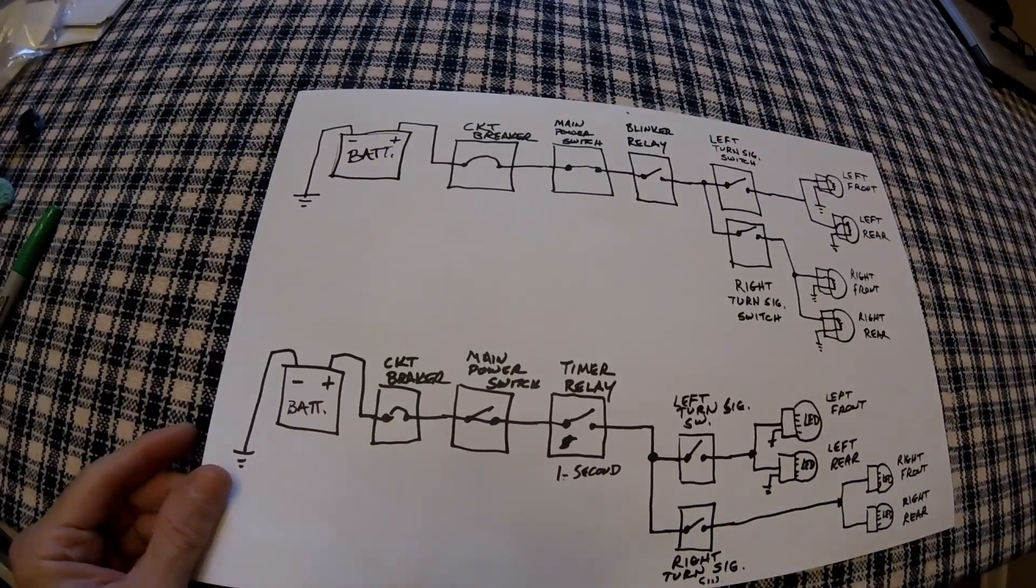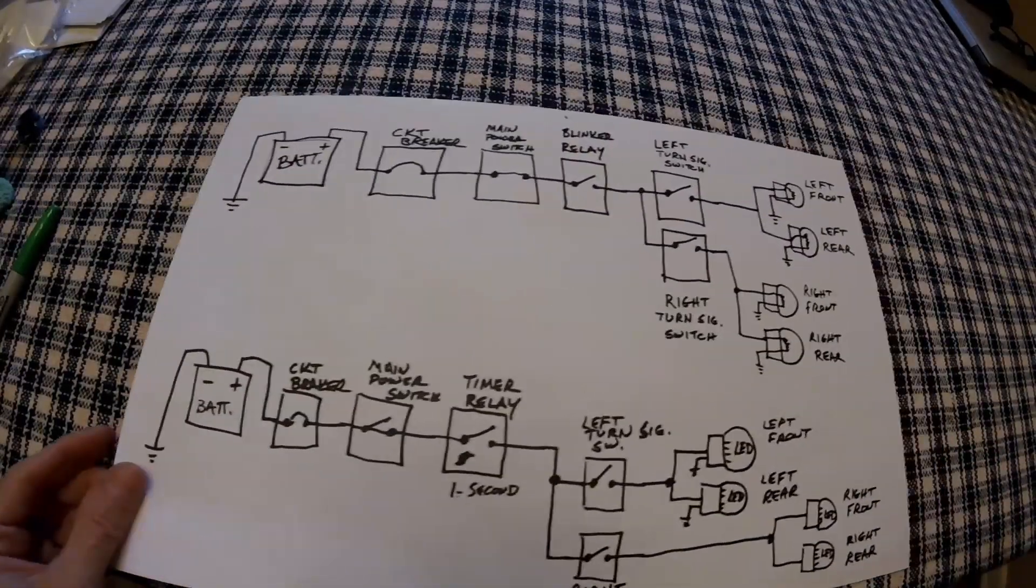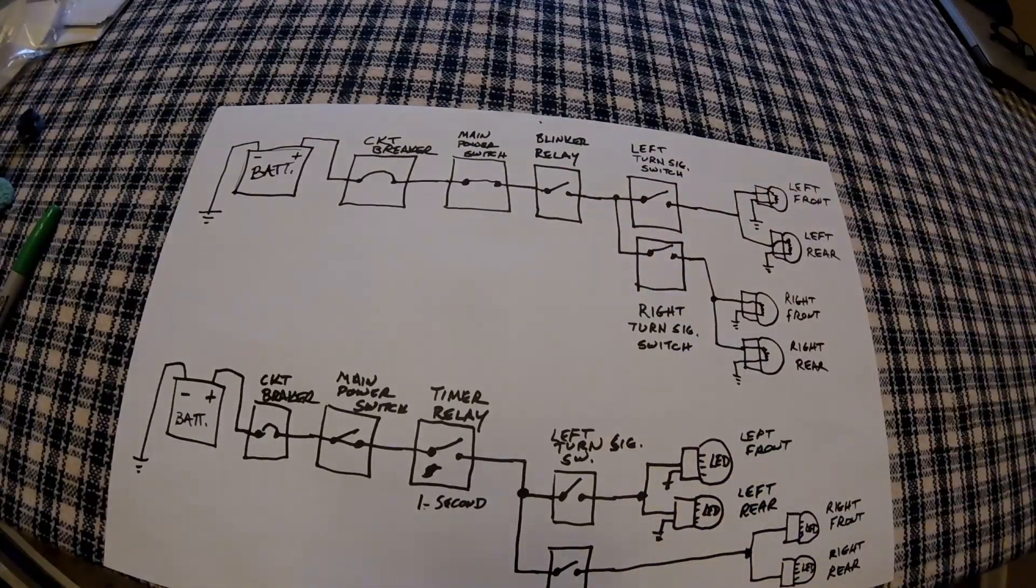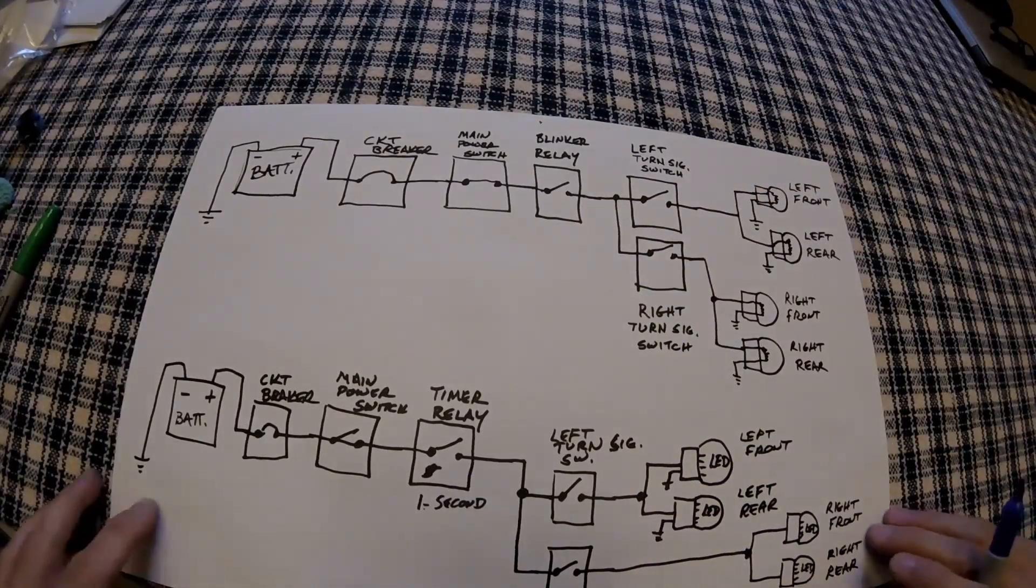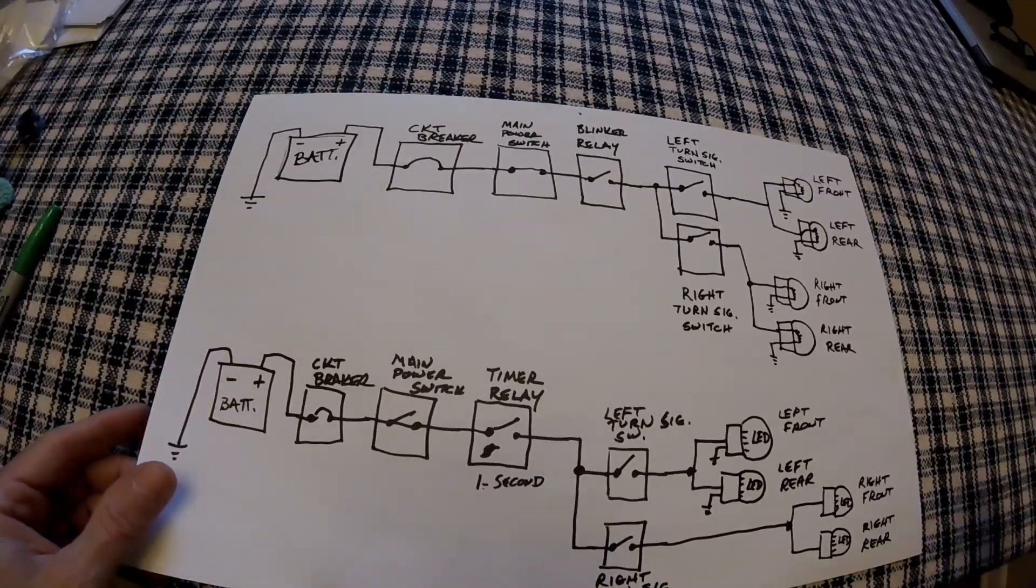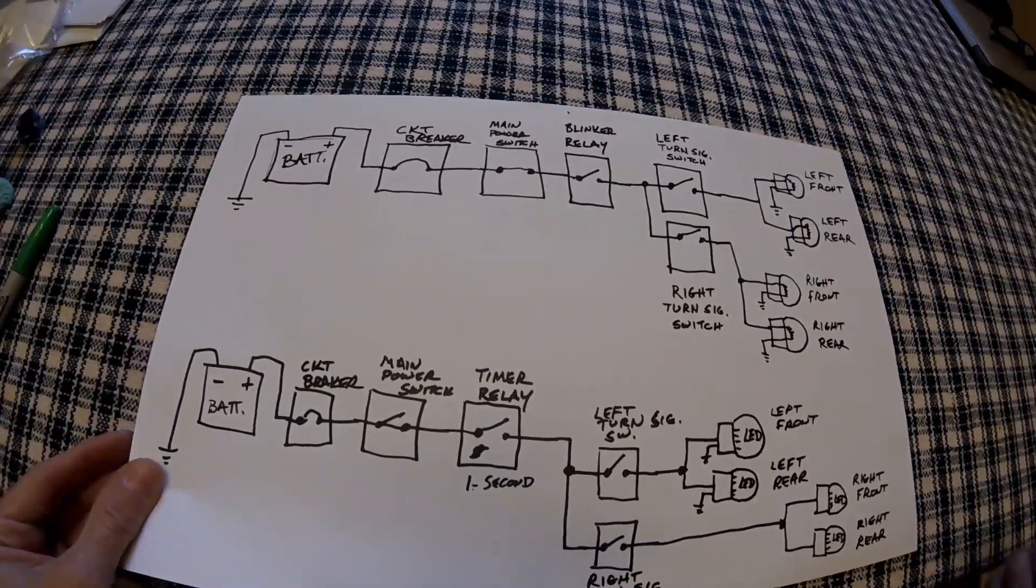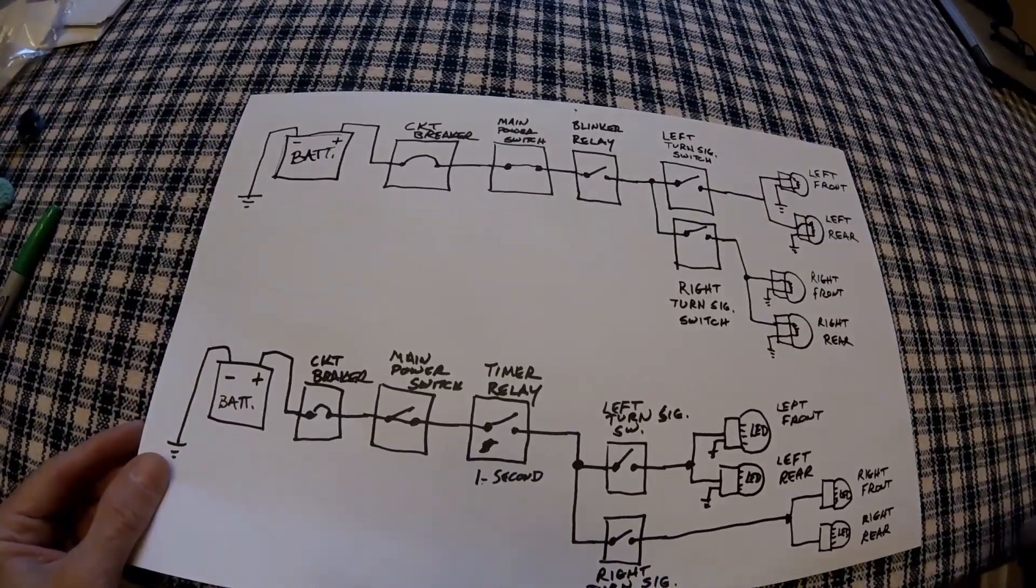This is a video on a blinker system on an older Harley, one that still has a blinker relay, but this same system is used on cars that have blinker relays. The newer cars and motorcycles use electronics to do this, so it's not quite the same as they use an electronic module.